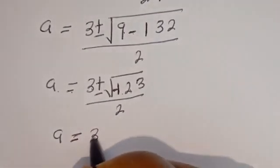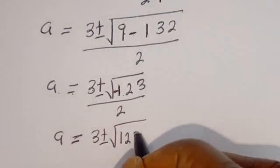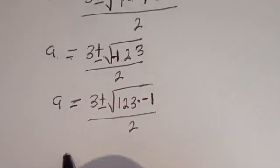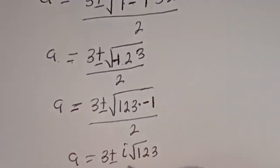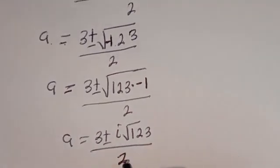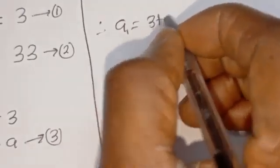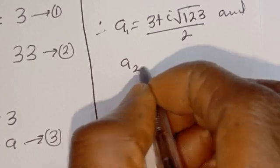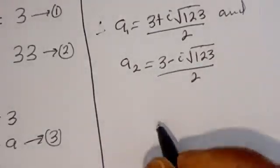Then A is equal to 3 plus or minus square root of minus 123, which can be written as 3 plus or minus i times square root of 123, divided by 2. So A1 is equal to 3 plus i√123 divided by 2, and A2 is equal to 3 minus i√123 divided by 2. Then we've got the value of A.